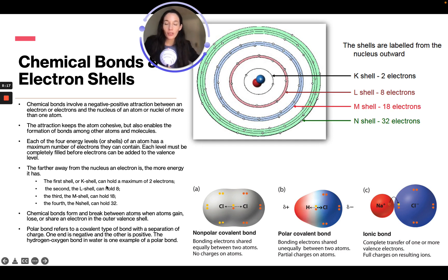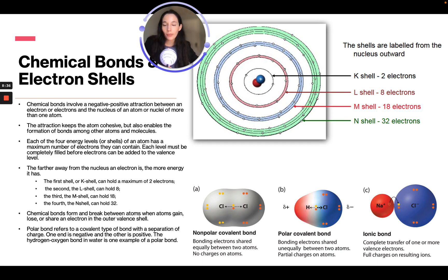The first shell, or K-shell, holds two electrons. The second, the L-shell, holds eight. The third, the M-shell, holds 18. And the fourth, the N-shell, holds 32. Chemical bonds form and break between atoms when atoms gain, lose, or share electrons in the outer valence shell.